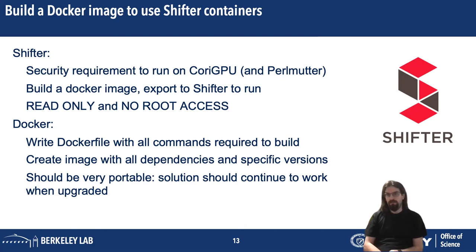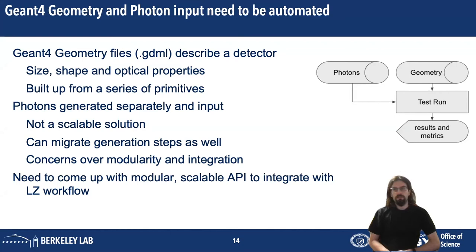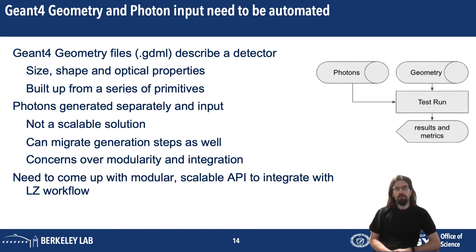The input of the photons and the geometry to the system has to be automated. Geometry files are Geant4 files with the GDML extension and they describe a detector — its size, shape, and optical properties, built up from a series of primitives. These photons are generated separately using the high-energy physics simulation pipeline and we then need to input those into this system. At the moment they're input manually, which is not a scalable solution. There are some proposed solutions, one of which is to migrate the generation steps as well, but there are concerns about modularity and portability. So we're looking to develop a modular, scalable API that will allow this system to integrate the LZ workflow when needed.